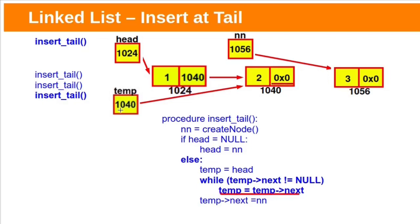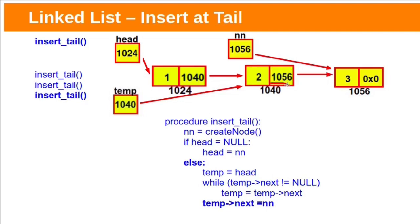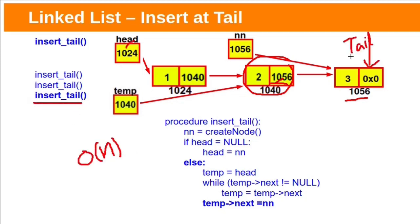So temp will be pointing to this last node. Now we need to place this new node address in temp next field. See here temp next field has the new node address 1056; previously it was null. To add a single node at the tail of the linked list, every time we need to find the tail node, it will take n comparisons if we have n nodes. So insertion at tail will take O(n) time. If we maintain one more pointer tail to keep track of the last node, insertion at tail will take O(1) time.